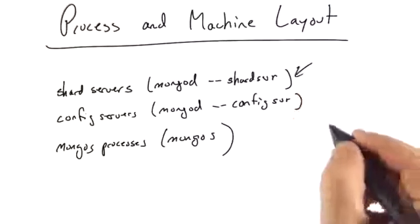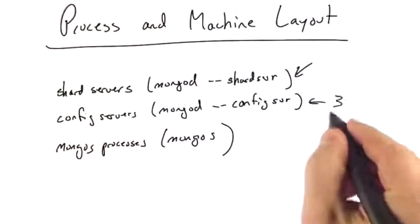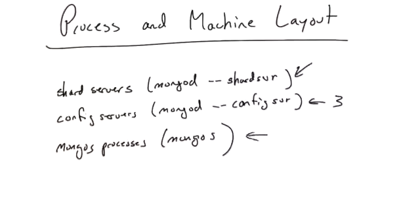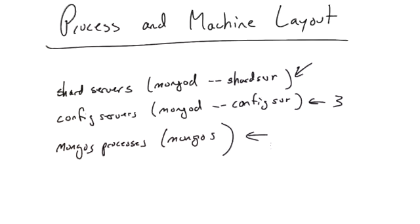So these will form replica sets, will be three of these, and we can have however many of these we want. So how might we lay something out given a certain amount of physical hardware that we have to work with? Let's look at some cases.